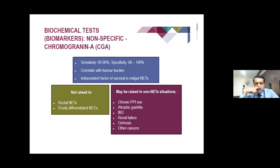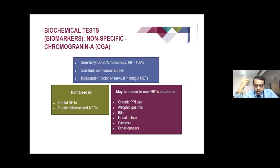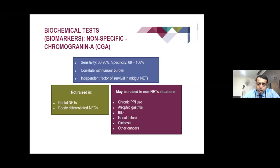Chromogranin A is a very important biochemical test with good sensitivity, although specificity is low — it can be raised in patients chronically on PPIs, atrophic gastritis, renal failure, and cirrhosis. Poorly differentiated neuroendocrine carcinomas may not have high chromogranin A levels, and rectal entities also often do not have very high levels. Nevertheless, chromogranin A is a useful marker and can help guide therapy.